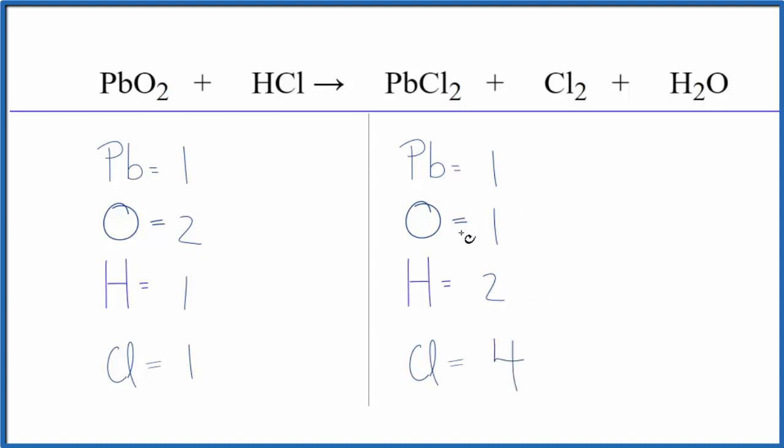Let's leave this oxygen till last. Why don't we just start with the chlorine atoms? I like to leave oxygen and hydrogen until the end. So I have four chlorine atoms on the product side and just one here with the reactants. I'm going to put a four in front of the HCl.